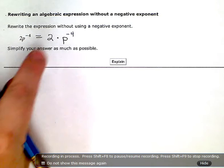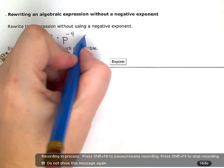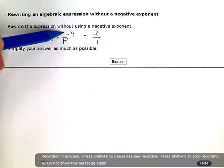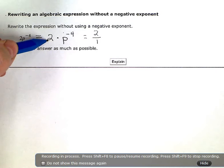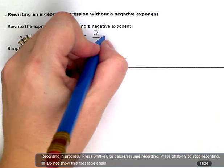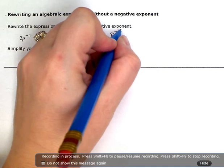So right now, the 2, if I wrote it as a fraction - whenever we're dealing with negative exponents, we're dealing with ratios or fractions. So I'm just going to write these both as fractions. So the 2 as a fraction would be 2 over 1. And then I'm going to write this one also as a fraction over 1.